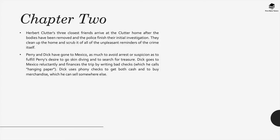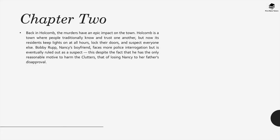Chapter 2: Herbert Clutter's three closest friends arrive at the Clutter home after the bodies have been removed and the police finish their initial investigation. They clean up the home and scrub it of all the unpleasant reminders of the crime. Perry and Dick have gone to Mexico — as much to avoid arrest or suspicion as to fulfill Perry's desire to go skin diving and search for treasure. Dick goes reluctantly and finances the trip by writing bad checks, using phony checks to get both cash and to buy merchandise he can sell elsewhere. Back in Holcomb, the murders have an epic impact on the town. Residents keep lights on at all hours, lock their doors, and suspect everyone else.